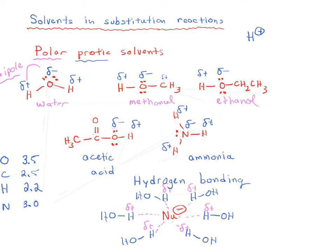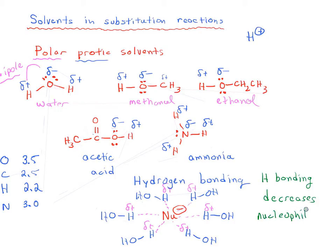If I have a nucleophile in a polar protic solvent like water, the key rule is that opposite charges attract. So if we have a negatively charged nucleophile in water, the partial positive charges of water are going to line up with our negative charge of the nucleophile — an attractive interaction. Everywhere the nucleophile goes, it will have a shell of solvent molecules around it. The more basic a nucleophile is, the more it can hydrogen bond. The key thing is that hydrogen bonding decreases our nucleophilicity.